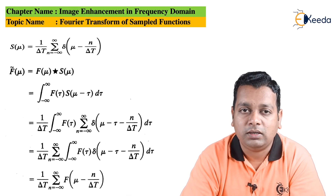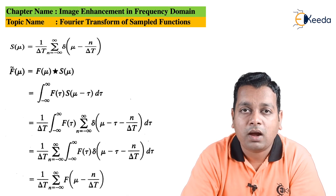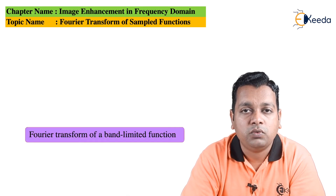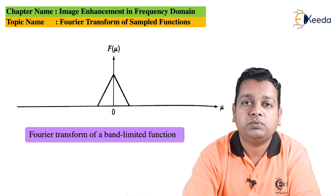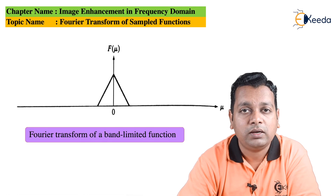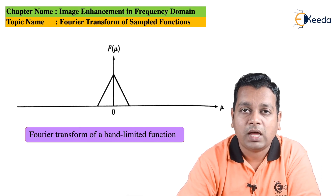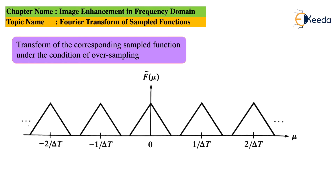The Fourier transform of a band-limited signal can be represented on a graph with μ on the horizontal axis and the transform value at the origin. As our topic is the Fourier transform of sampled functions, we apply the sampling theorem, which states that the sampling rate must be sufficient so that the signal can be represented and recovered. We will now look at the transforms under three conditions: over-sampling, critical sampling, and under-sampling.